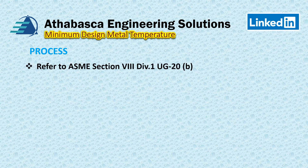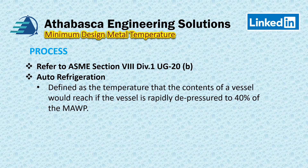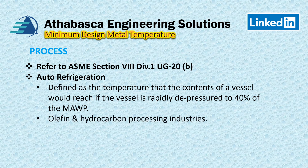Now if you look at ASME Section 8 Division 1, in particular UG-20 Part B, you'll see some definitions of process conditions. There's a term called auto-refrigeration, for example, and it's defined as the temperature that the contents of a vessel would reach if the vessel were rapidly depressurized — up to 40% of the MAWP. This is related to the minimum pressurization temperature. The olefin and hydrocarbon processing industries can experience auto-refrigeration issues.